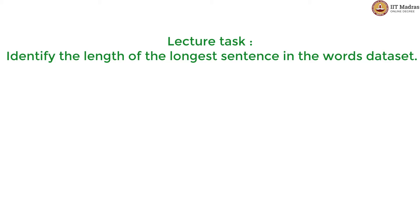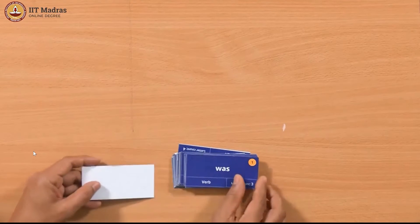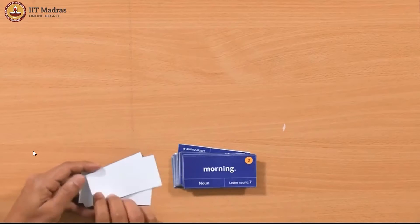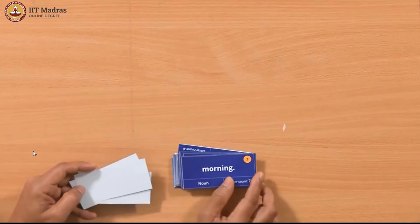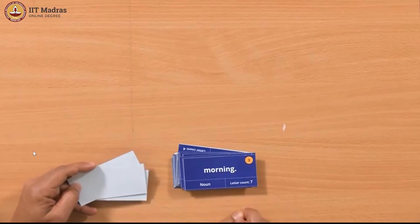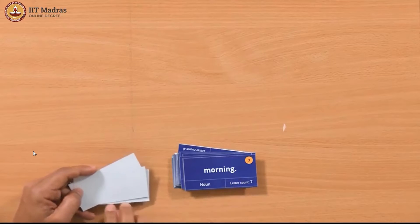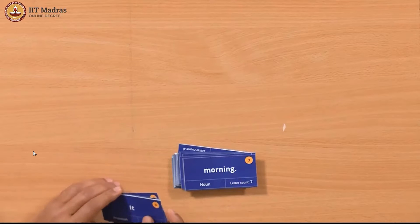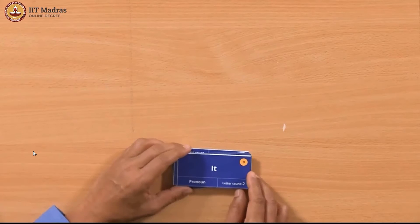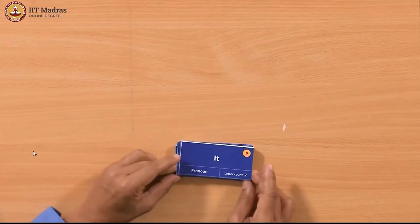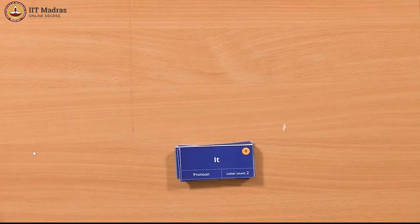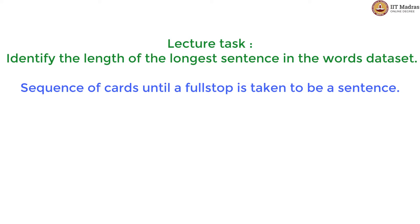How did they identify a sentence while going through the iterations? They went card by card until a card contained a full stop. A full stop indicates the end of a sentence, and the cards until that full stop are taken to be one sentence. That number of cards is supposed to be a sentence.